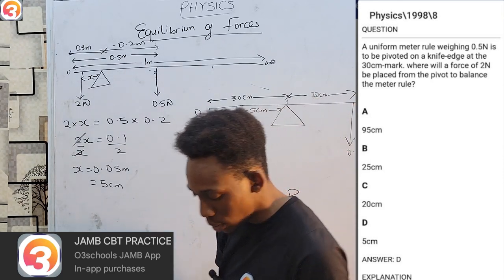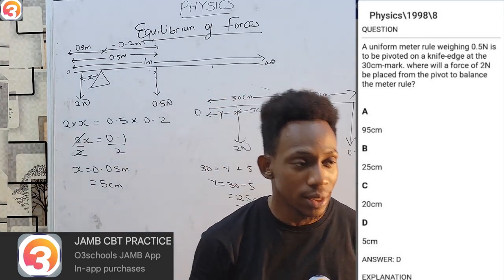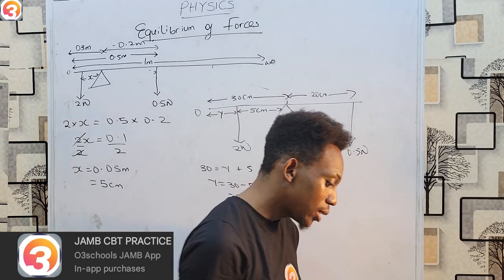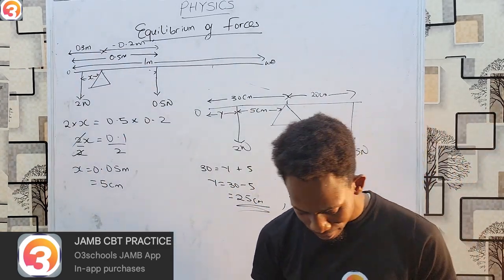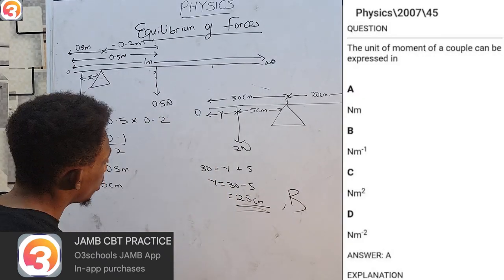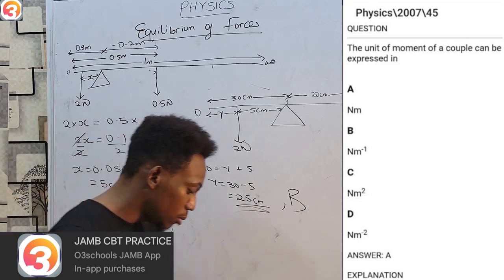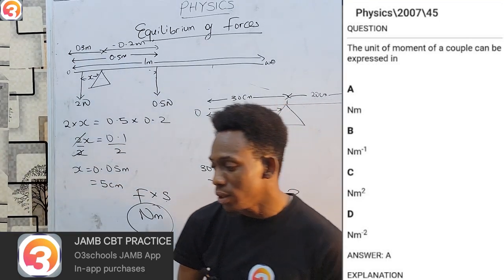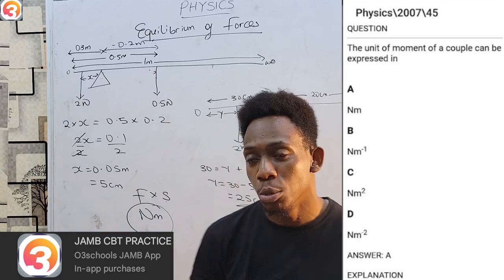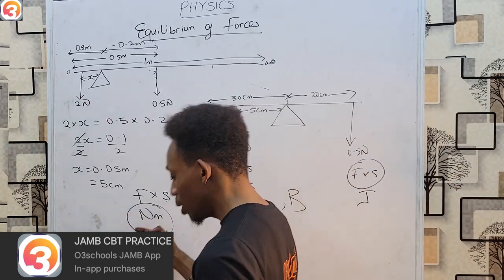While dealing with this topic, take time to read your question carefully or you can easily make mistakes. Our next question is from 2007, number 45: 'The unit of a couple can be expressed in what?' A couple equals force × distance — force is in newtons, distance in meters — so the unit is newton-meters, option A. Note: they may also ask which quantity has the same unit as work; that would also be couple, since work = force × distance too, though work uses joules while couple uses newton-meters.